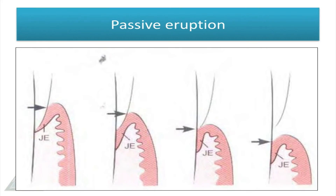Passive eruption refers to the exposure of tooth due to apical migration of junctional epithelium. It is of four stages. Stage one: both the junctional epithelium and sulcus are on enamel. Stage two: junctional epithelium is partly on enamel and partly on cementum. Stage three: junctional epithelium is fully on the cementum. Stage four: the junctional epithelium and sulcus are fully on the cementum.